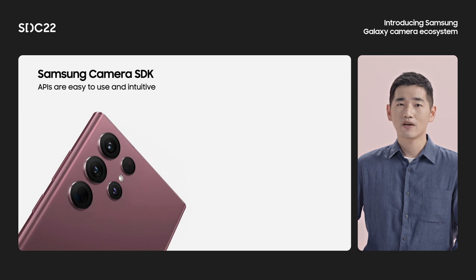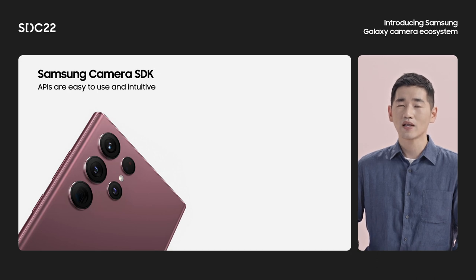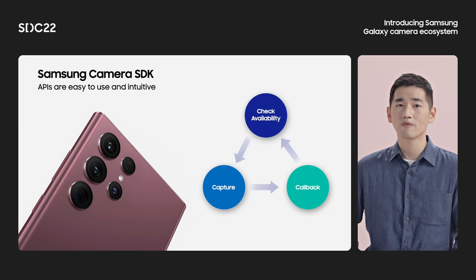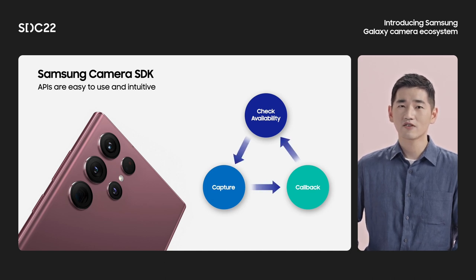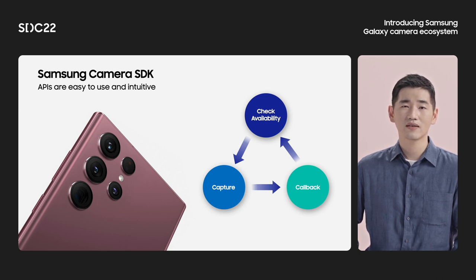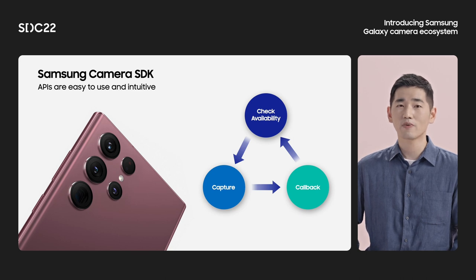The code flow for using SDK APIs is very simple. Because of hardware and software limitations, not all features are supported on all devices. So what apps need to do first is check the availability of each feature before using it. If it is supported, then just capture with a simple command, and the result will be delivered to the app side via a callback system when the process is done.